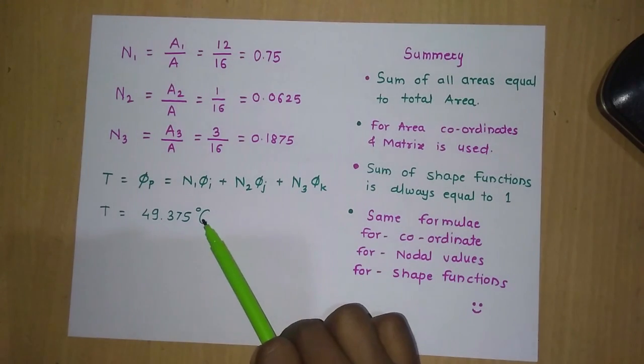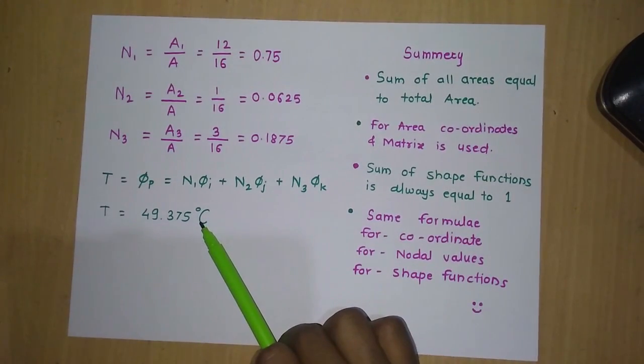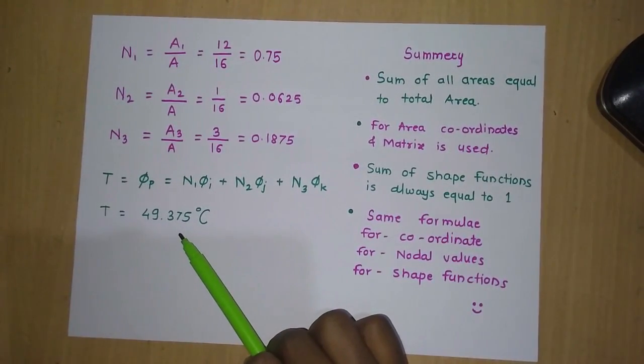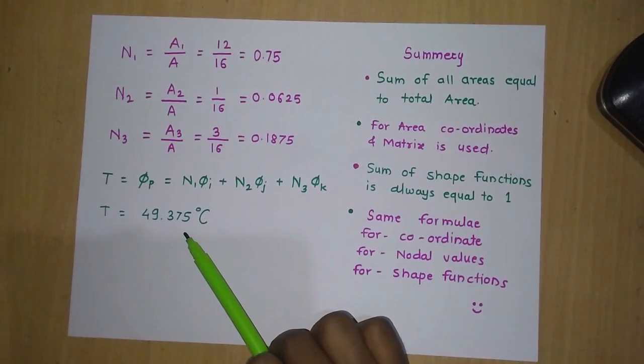Substituting the nodal temperatures and shape function values into the equation, the temperature at point P equals 49.375 degrees Celsius. Always remember to include the unit here.